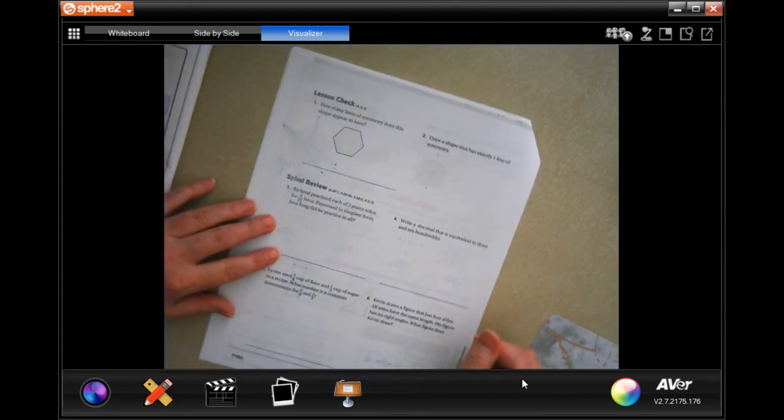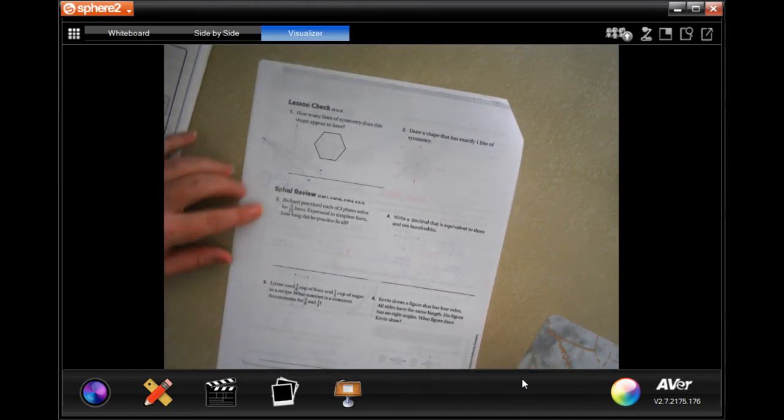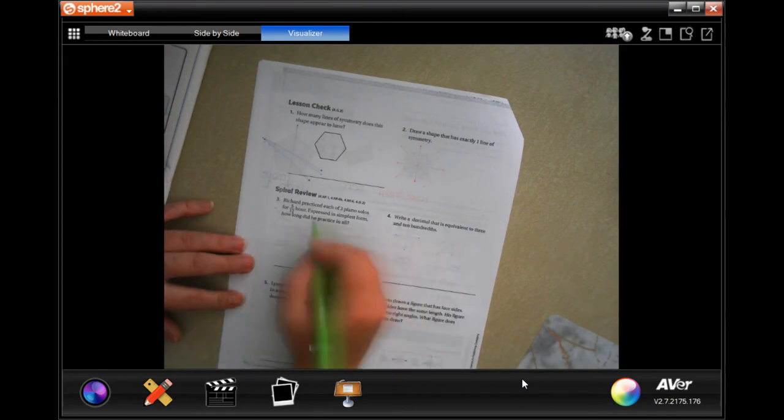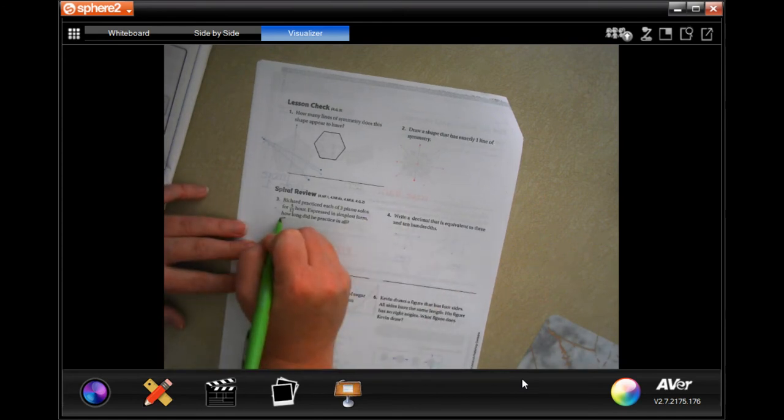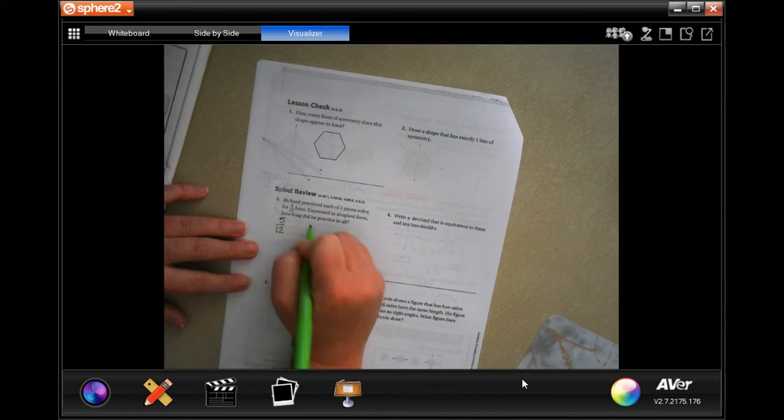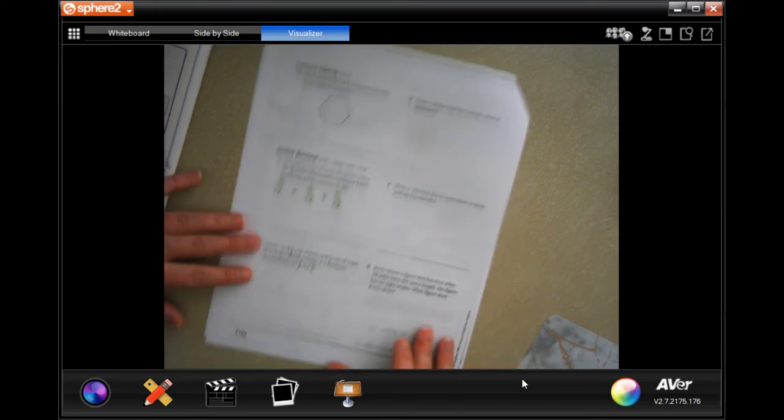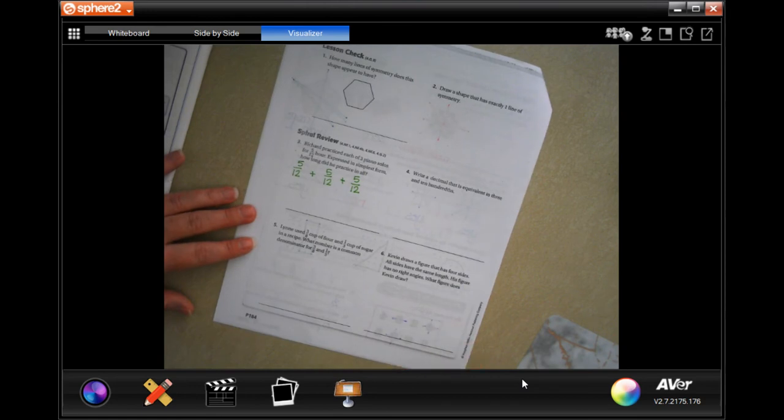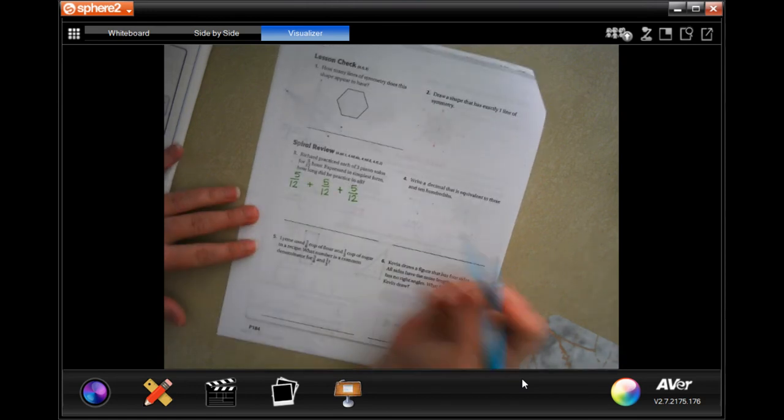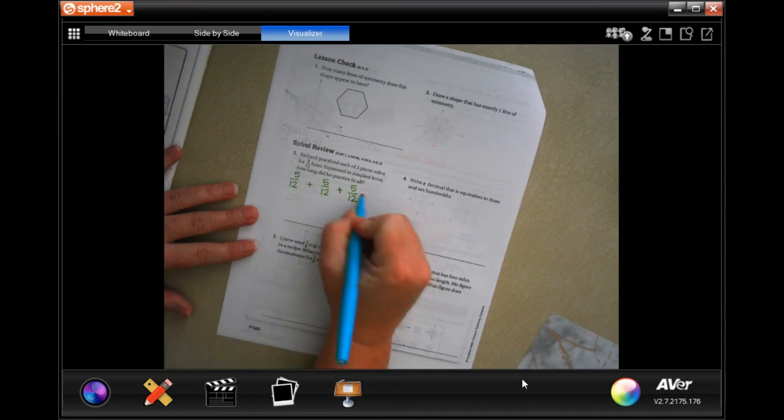Let's see. Richard practiced each of three piano solos for 5/12 of an hour. Expressed in simplest form, how long did he practice in all? Well, three piano solos, so we're going to have 5/12 and we're going to have three of those.